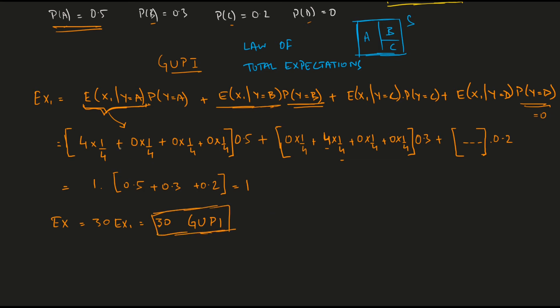GUPY's total expected score is 30 times the expected score in the first question, which turns out to be 1. So her total expected score is 30. We've now found the expected score for GUPY. Now we're also interested in finding the expected score for BAGA, who is a bit different from GUPY.